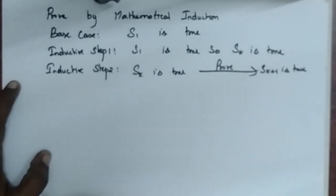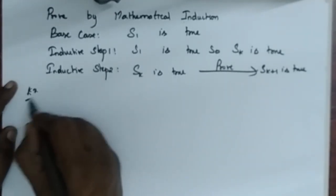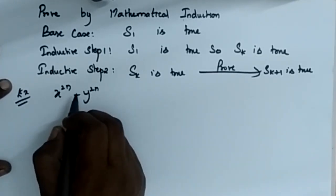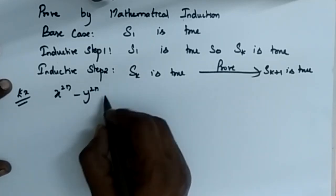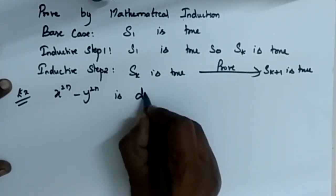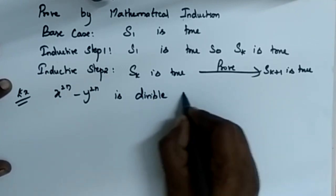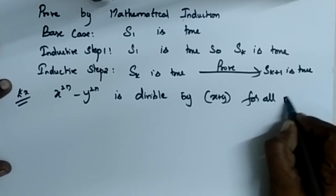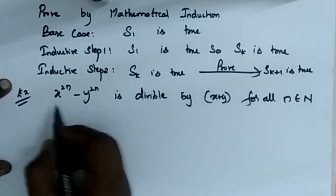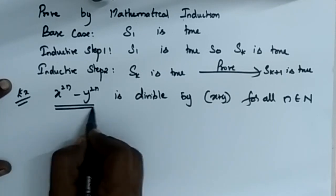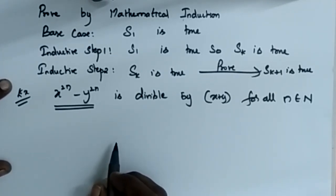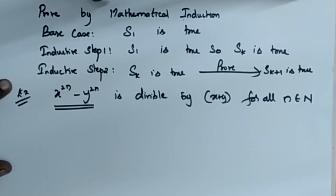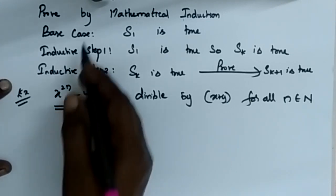Now we will see this with an example. We have an expression X power 2N minus Y power 2N, and it is said that it is divisible by X plus Y for all N belonging to the natural numbers. So we have to show that this expression X power 2N minus Y power 2N is a multiple of X plus Y. According to mathematical induction, we go to the first step.